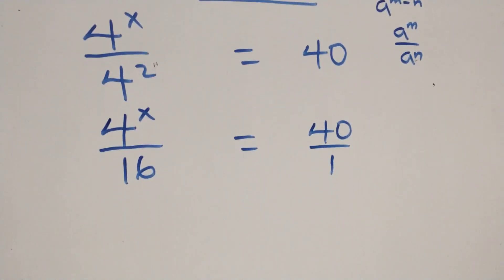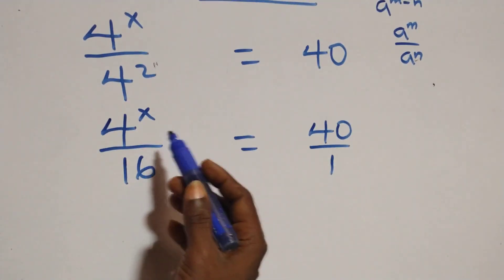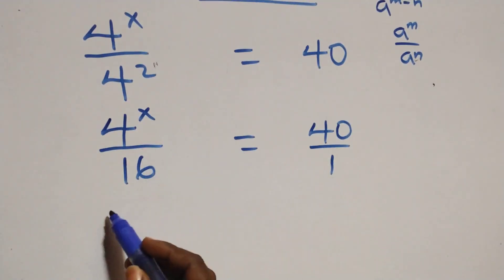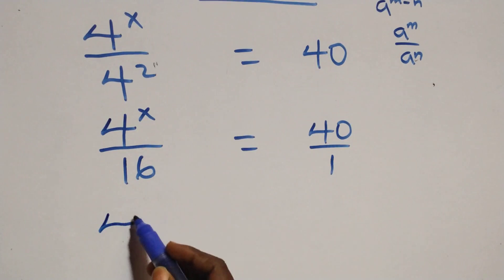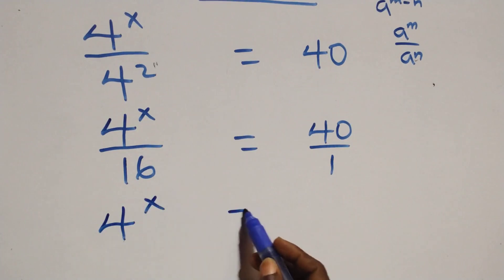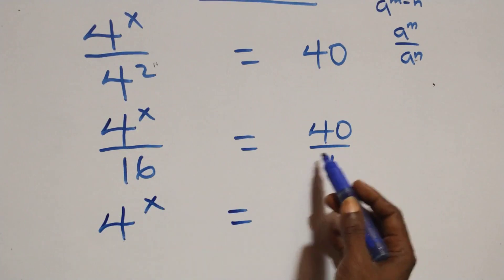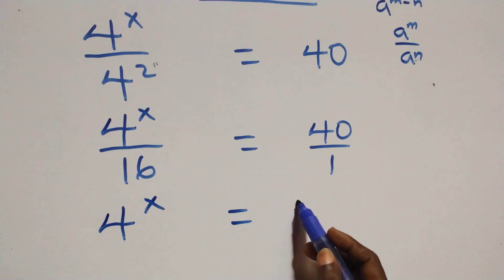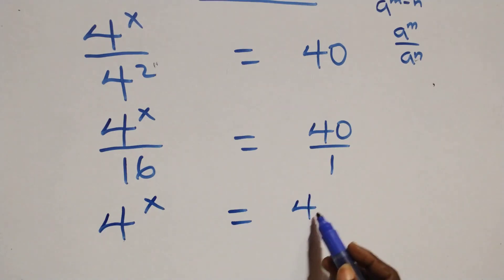The next step here, we'll cross multiply. 4 raised to power x times 1 is the same thing as 4 raised to power x, and this equals to 40 times 16.